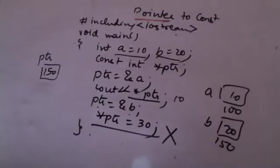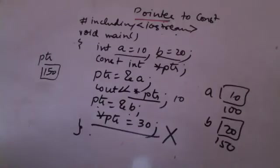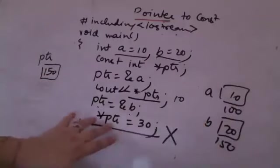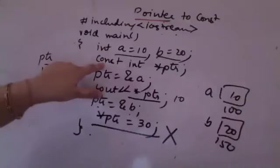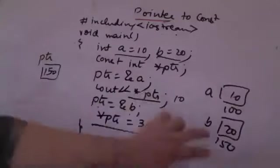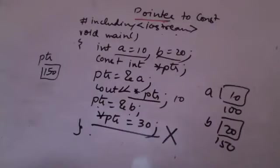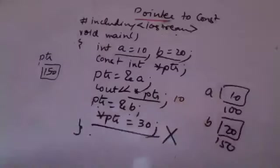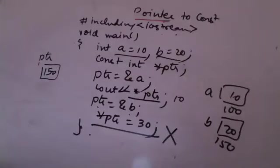This line would not work — it gives me an error: assignment of read-only location. It has become a read-only location. Constant means read-only; you cannot change the value. Location 150 is now constant because this is a pointer to a constant. When it is pointing to whatever location, the value of that location must be constant. The address can still change in the pointer, but whatever is stored at the address the pointer is pointing to — that cannot change. This will give me an error. This is what I mean by a pointer to a constant.